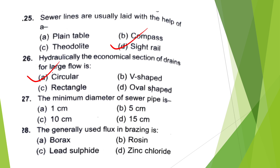Minimum diameter of sewer pipe is — 1 cm, 5 cm, 10 cm, or 15 cm? The answer is option D — 15 cm.